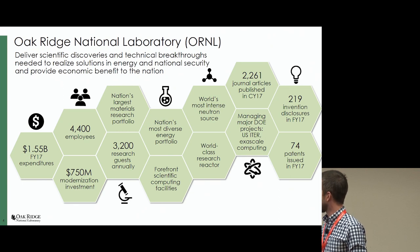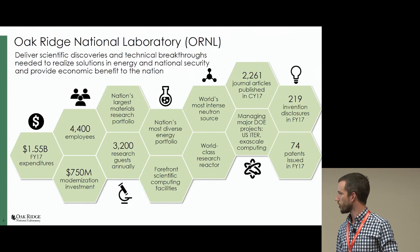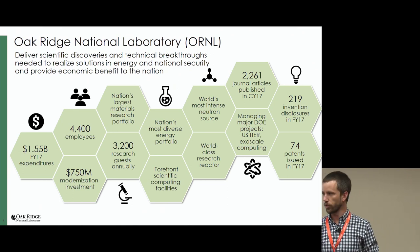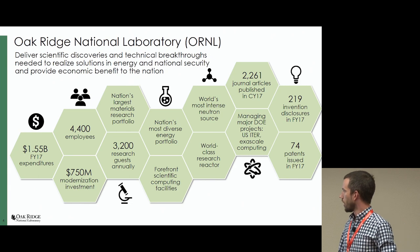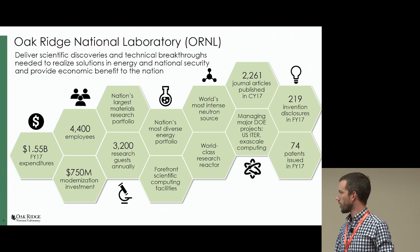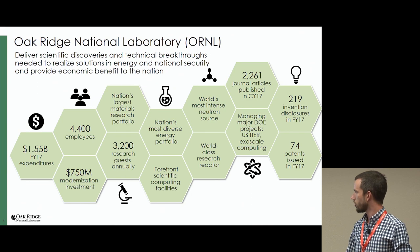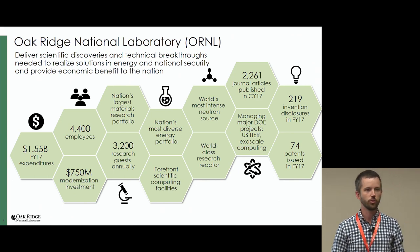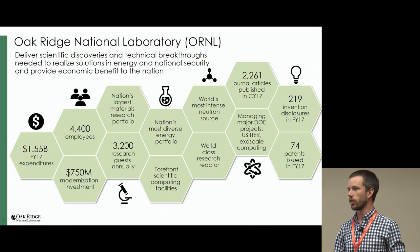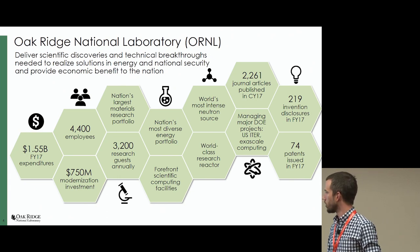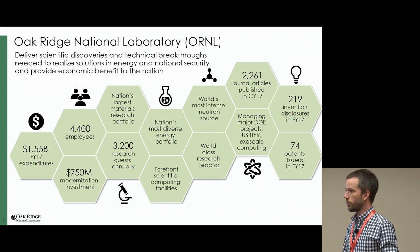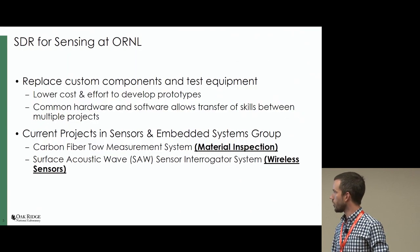Oak Ridge National Laboratory has about 4,000 researchers — it kind of swells in the summer when all the interns come in and is a little quieter in the fall and spring. It's about a billion and a half dollars of expenditures every year. We're very diverse in the type of research we do. You might have seen news lately that Summit just went online, which is the biggest supercomputer in the world. We also do materials research, neutron research, and sensing.